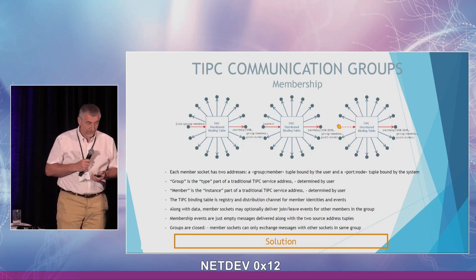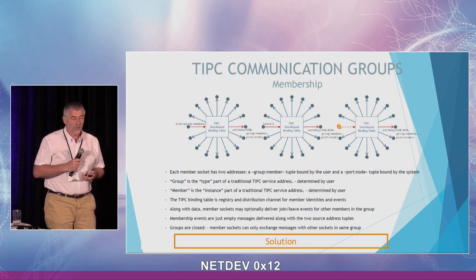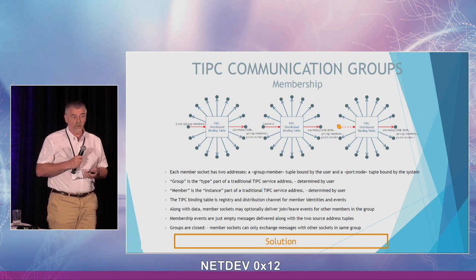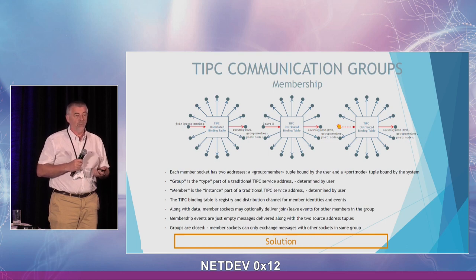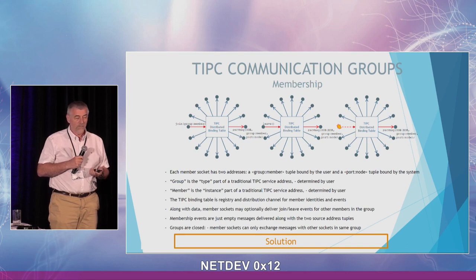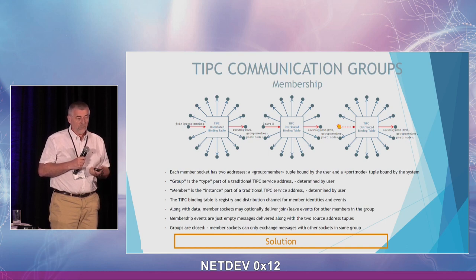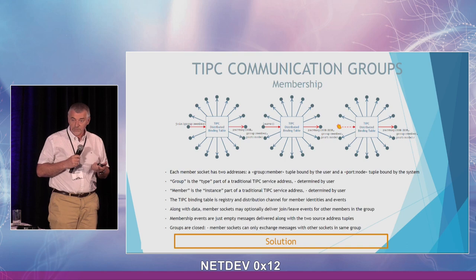The solution is what we call communication groups. We can initially think of them as multicast groups. The basic idea is that each socket continuously tracks all other members of the group. A socket joins a group via a setsockopt call, specifying a group and member tuple of two integers. This is distributed via TIPSY's internal distributed binding table to all other sockets in that group, so all sockets continuously know about all other sockets in the group, making many things possible.